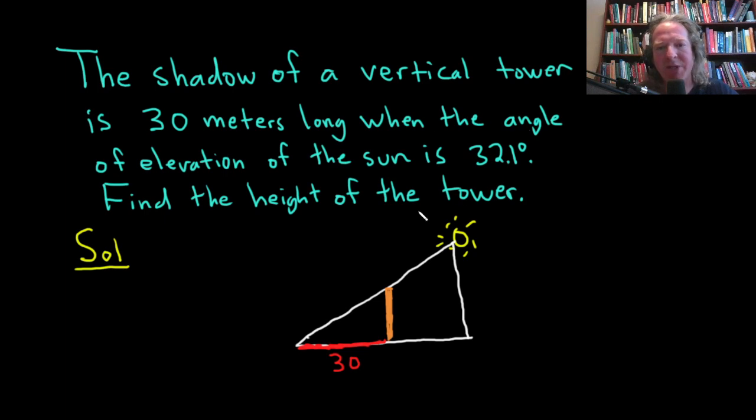And we're also told that all of this is happening when the angle of elevation of the sun is 32.1 degrees. So I'm going to indicate that here. So this is the angle of elevation of the sun, and it's 32.1 degrees. Find the height of the tower. So we have to find the height of this orange tower. We can just give it a name. It doesn't matter what we call it. Because it's a height, I'm going to call it h.